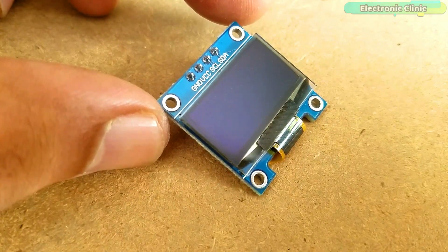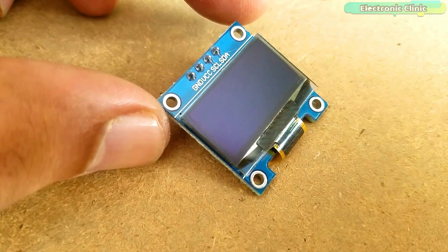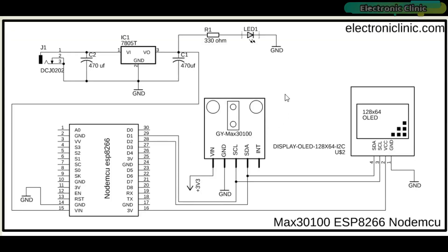This is the I2C supported 128x64 OLED display module that we will use for displaying the blood oxygen and BPM values. The circuit diagram is very simple. A 5V regulated power supply based on the LM7805 voltage regulator is used to power up the NodeMCU ESP8266 Wi-Fi module. D1 and D2 pins, which are the SCL and SDA pins, are connected with the SCL and SDA pins of the MAX30100 and OLED display module, while the voltage and ground pins of both modules are connected with the 3.3V and ground pins of the NodeMCU ESP8266.